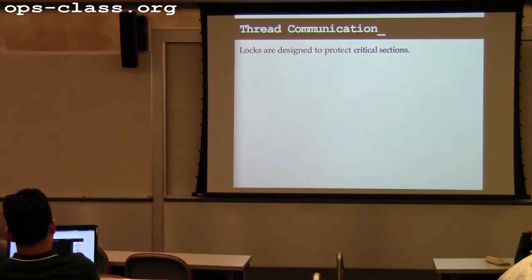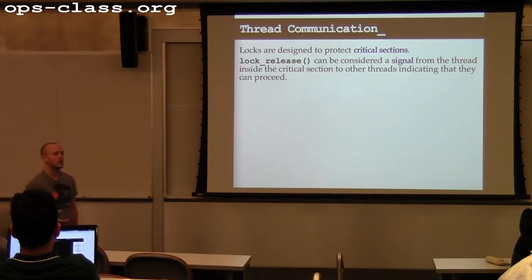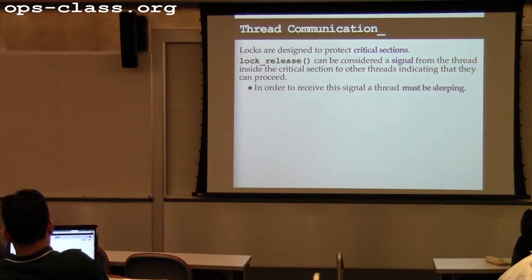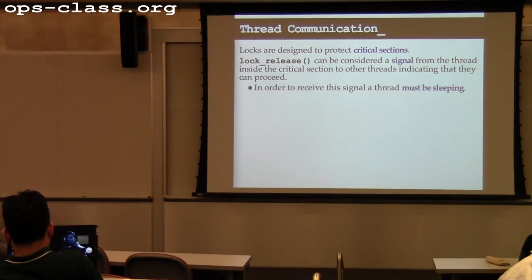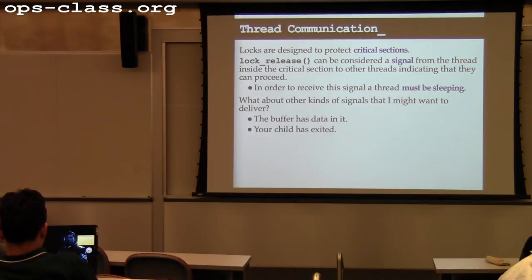So far we've talked primarily about locks, which are largely designed to protect critical sections and other pieces of shared state. Lock release can be thought of as a signal — a thread signaling that it's done using a resource and another thread can now enter the critical section. But there are other types of signals we might want to deliver between threads. For example: a buffer that has data in it now, where other threads are responsible for doing something with the data once it arrives; or your child process has exited and the parent needs to know.